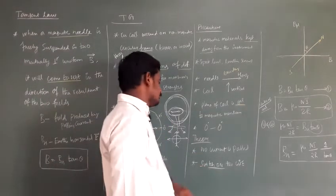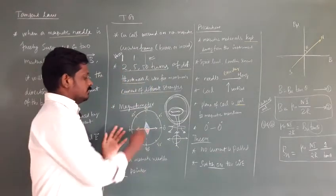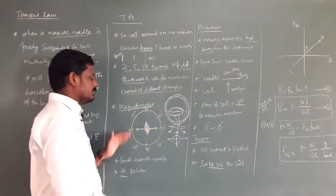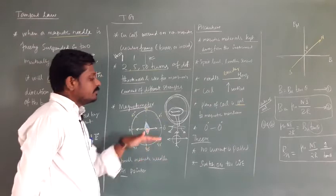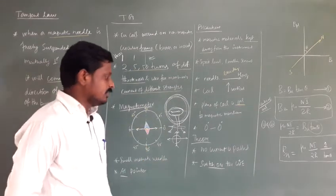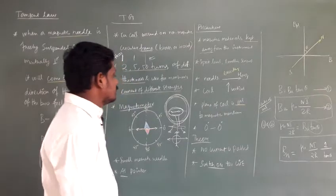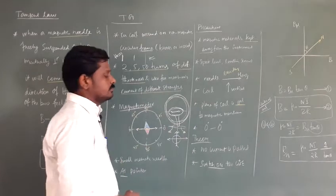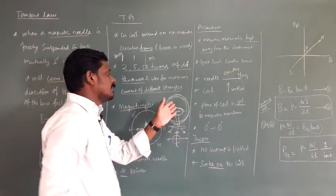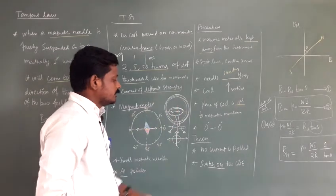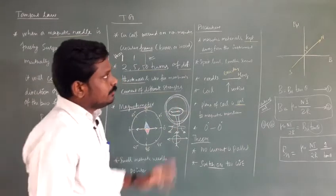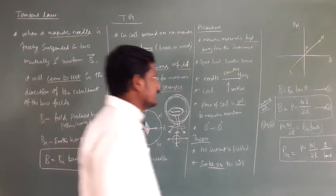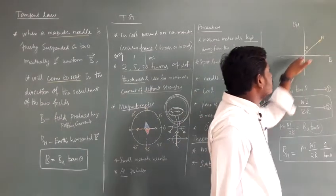Regarding the theory: when no current is introduced in the circuit, there is only one magnetic field — the Earth's horizontal magnetic field — and the magnetic needle points in the direction of that horizontal magnetic field. When the circuit is switched on, current flows in the circular coil, producing a magnetic field perpendicular to the circular coil. So there are now two crossed magnetic fields, BH and B, and the magnetic needle comes to rest at the resultant of the two fields.